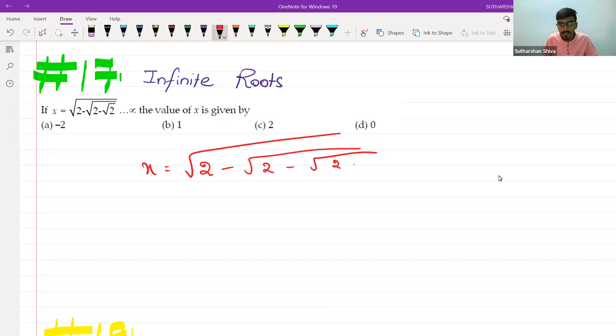Whenever we see a question like this, we will try to find the product of two consecutive numbers. How can I write that? 1×2 is 2, or 2×1 is 2. So I will write the product of two consecutive numbers, that is 1×2.